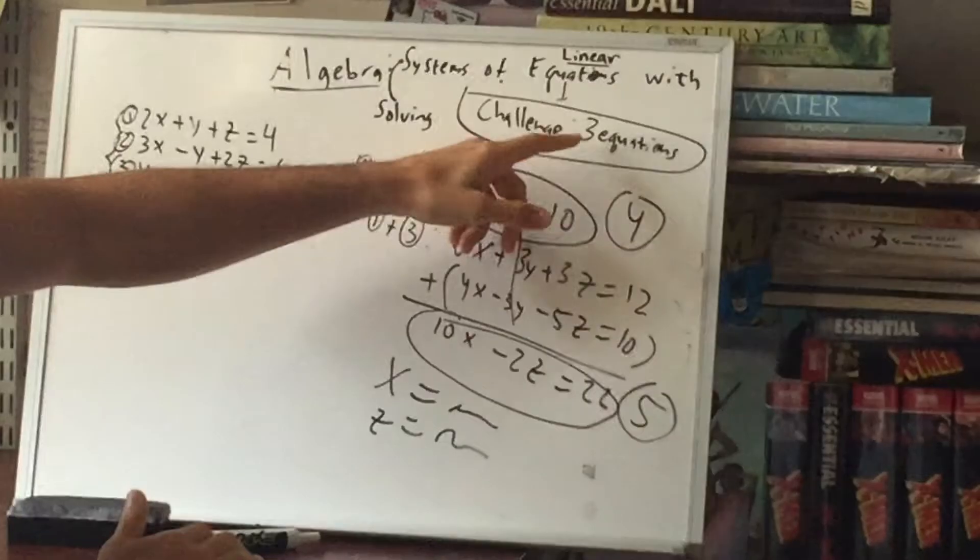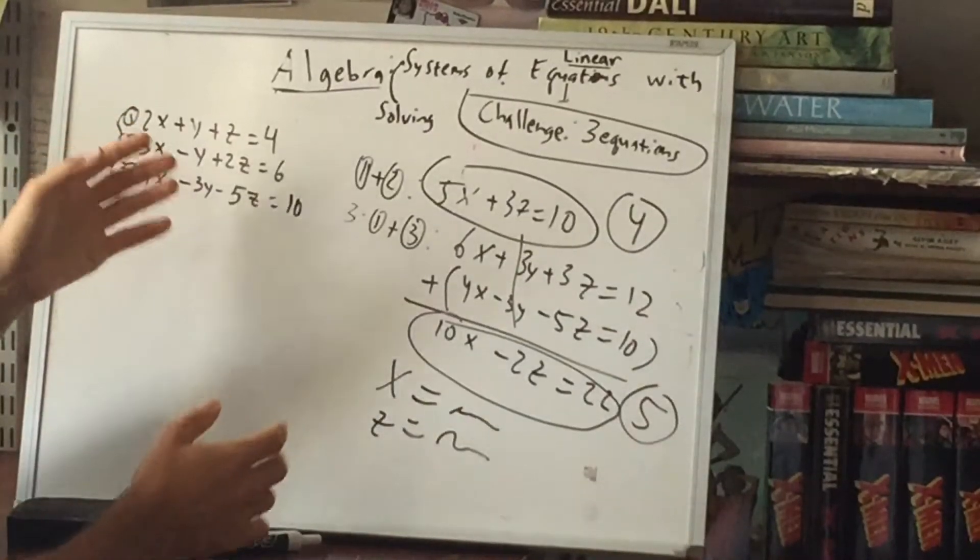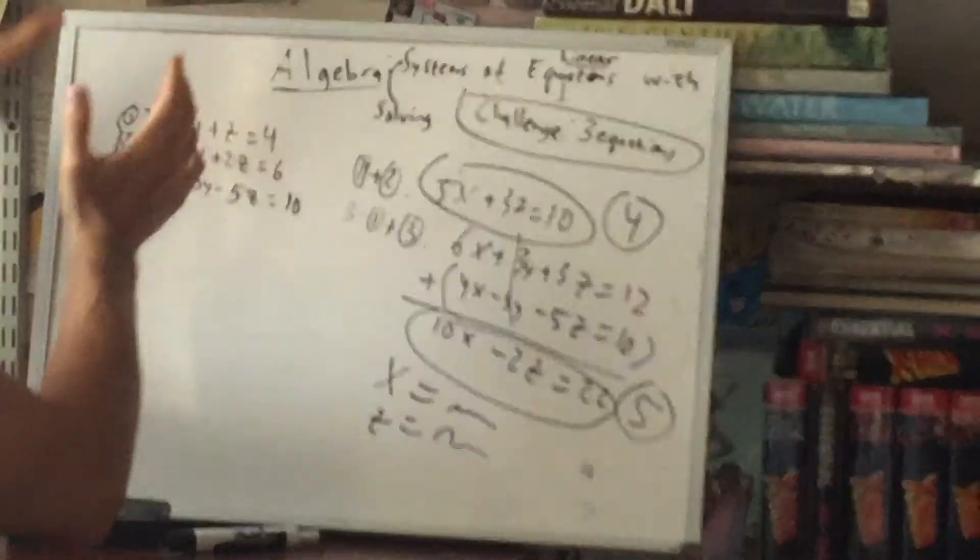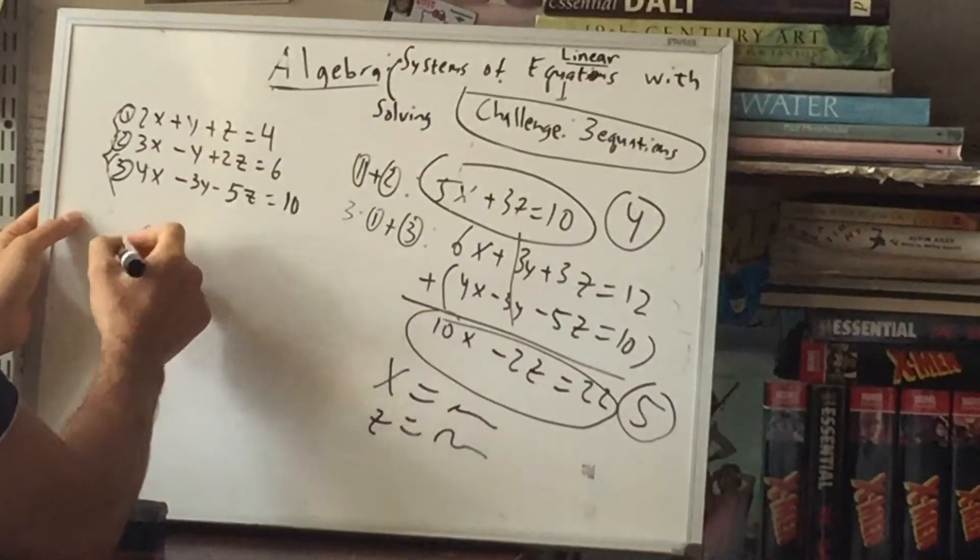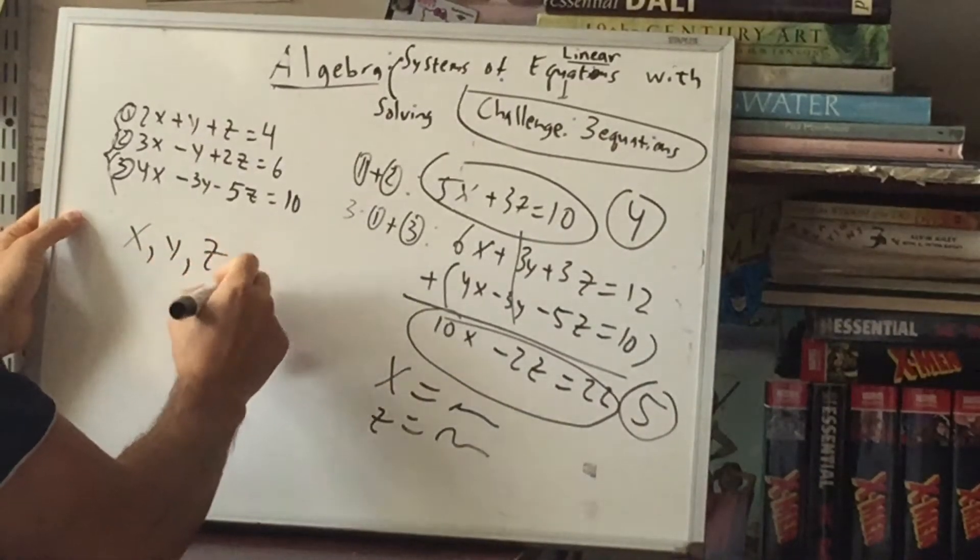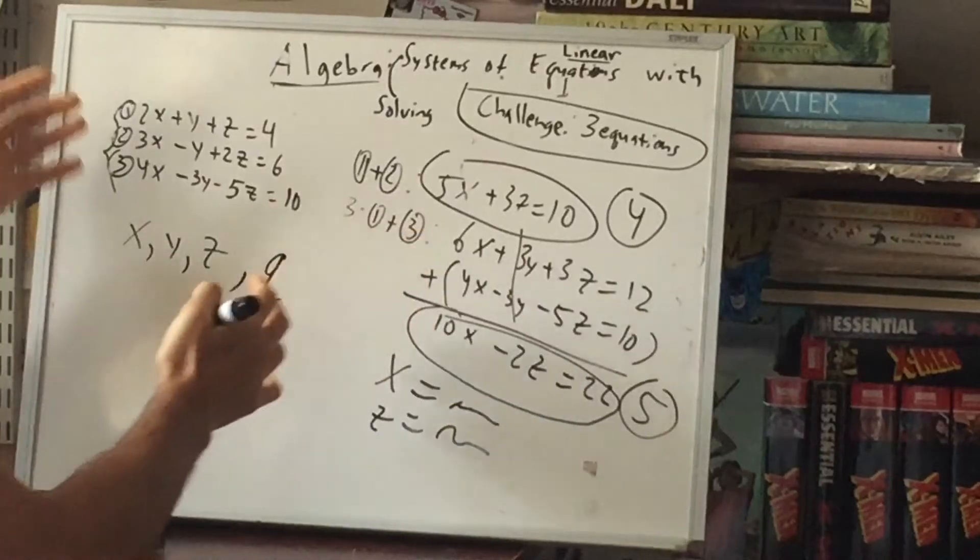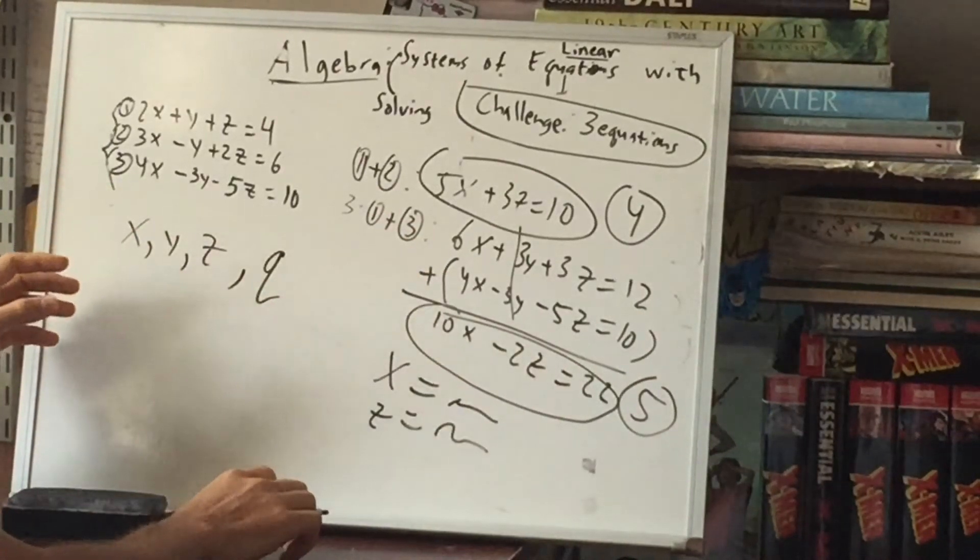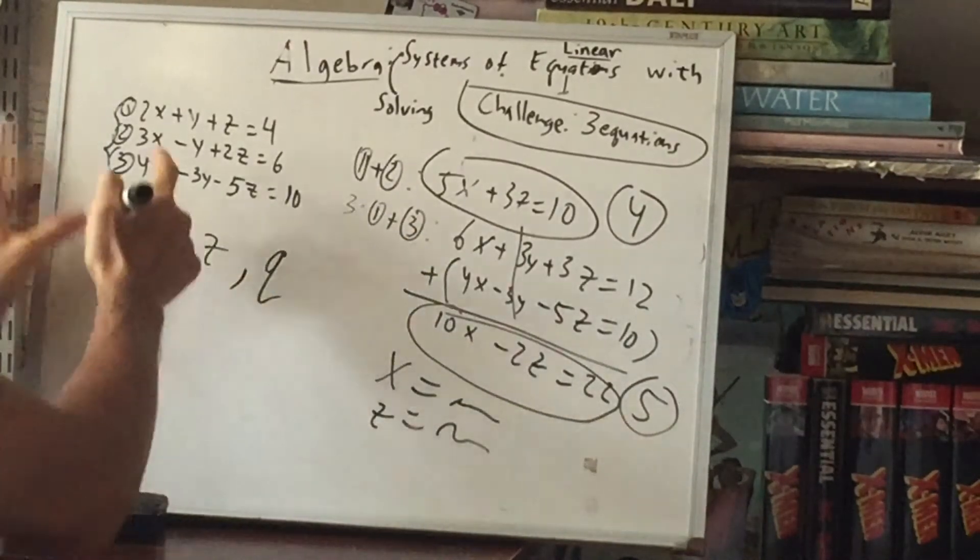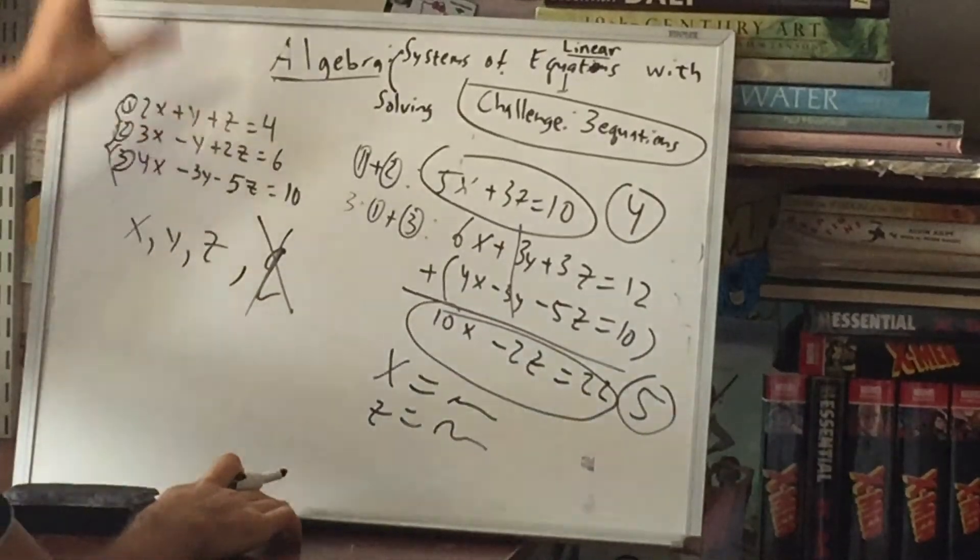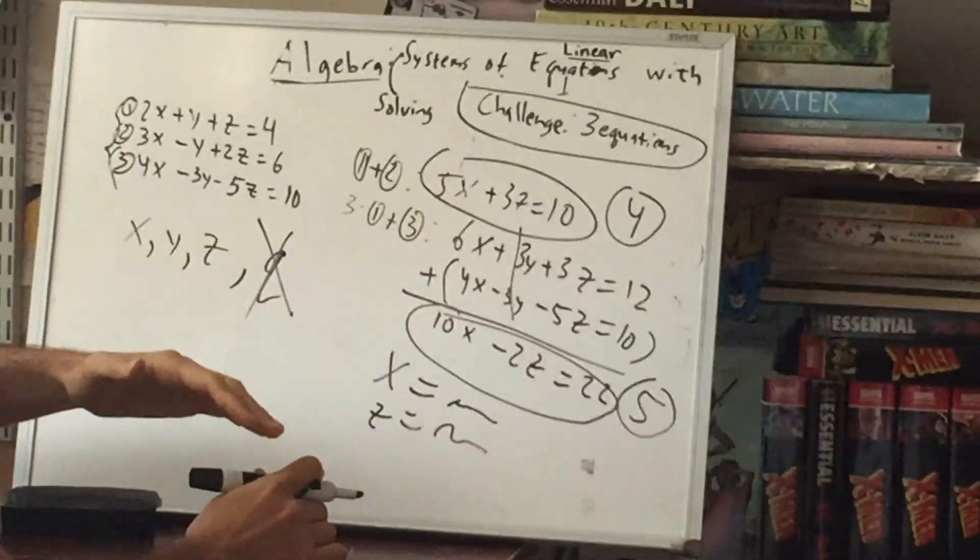So if we had four equations, you do the same thing. It would just be more annoying. So first, you go from four equations down to this case. So let's say we had x's, y's, z's, and q's in four equations with these letters. So first, you would, let's say, get three equations with no q's. And then from here, you would do that. So you'd keep simplifying.